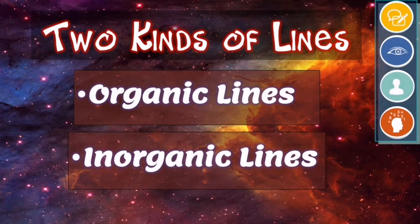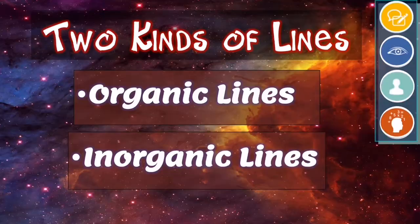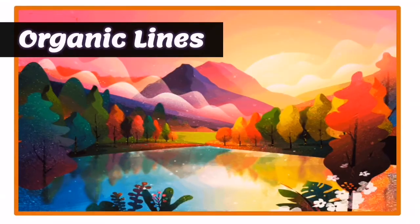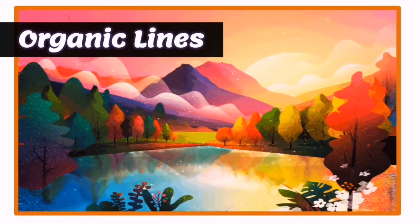Now let me tell you about the two kinds of lines. We have the organic lines and inorganic lines. Organic lines have length and direction that form an irregular shape. They can be found in nature and use curved lines. Just like in the picture, the trees, mountains, and clouds are examples of organic lines.